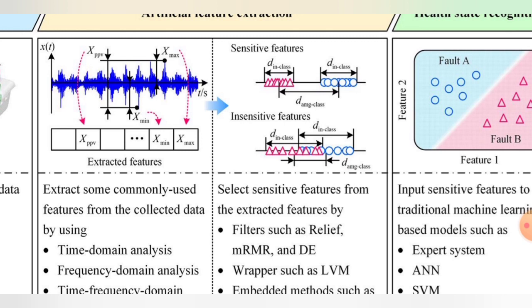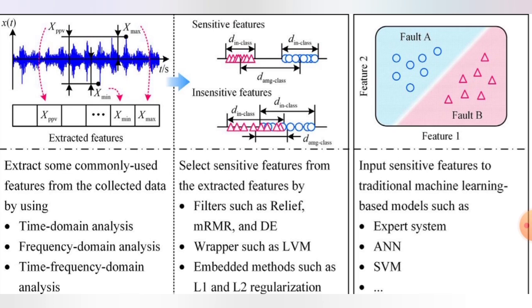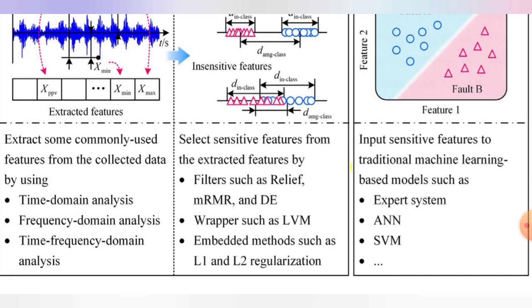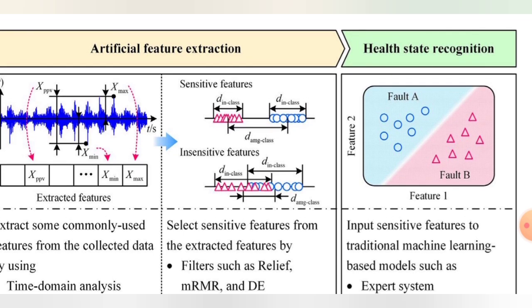We select sensitive features from the extracted features using filters such as Relief and mRMR, wrappers such as LVM, and embedded methods such as L1 and L2 regularization. The artificial extraction uses both sensitive and insensitive features to extract data.